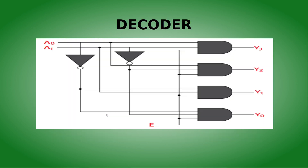This is the combinational circuit for the two-to-four decoder. There are two inputs, A0 and A1, and four outputs Y0 to Y3, along with an enable input.